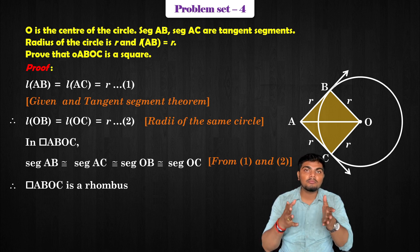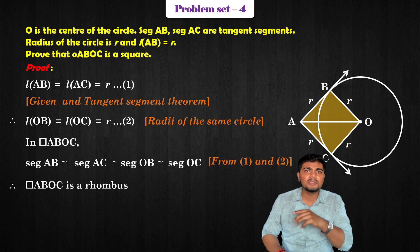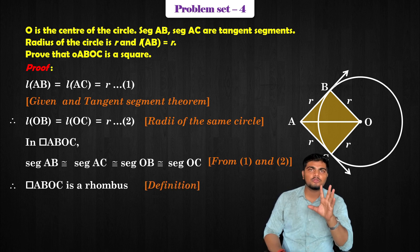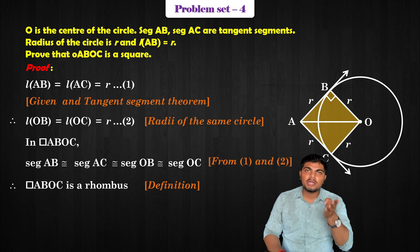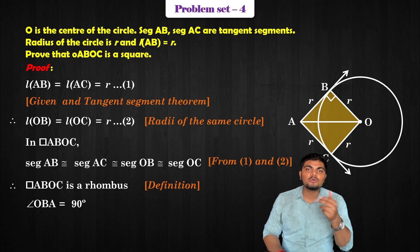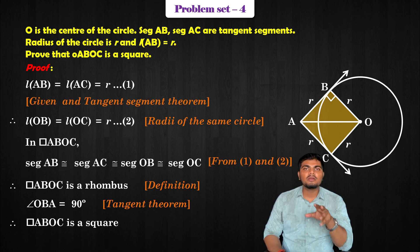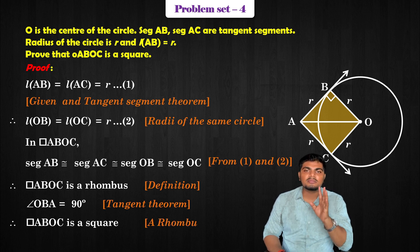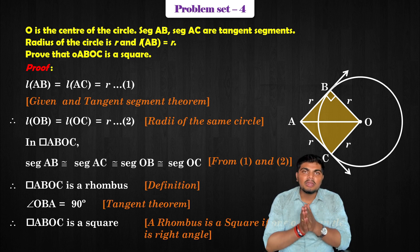But I cannot say directly it is a square just because 4 sides are equal — it could be a rhombus. However, by the tangent theorem, angle OBA is 90 degrees. Since all 4 sides are equal and one angle is 90 degrees, a rhombus with one right angle is a square. Therefore quadrilateral ABOC is a square.